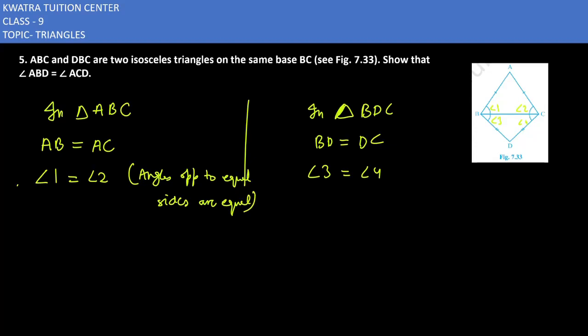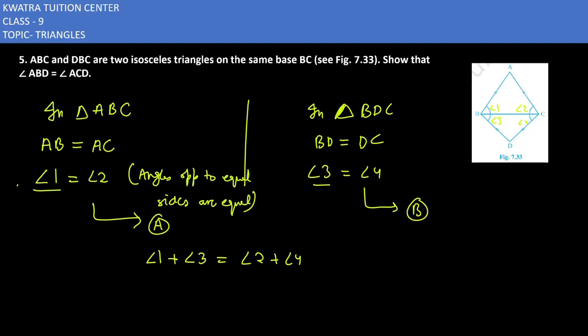We take the first result as equation A and the second as equation B. Now adding A and B: angle one plus angle three on the left side gives angle ABD, and angle two plus angle four on the right side gives angle ACD. So angle ABD is equal to angle ACD. This is the answer for the fifth one. Now we'll be moving to six.